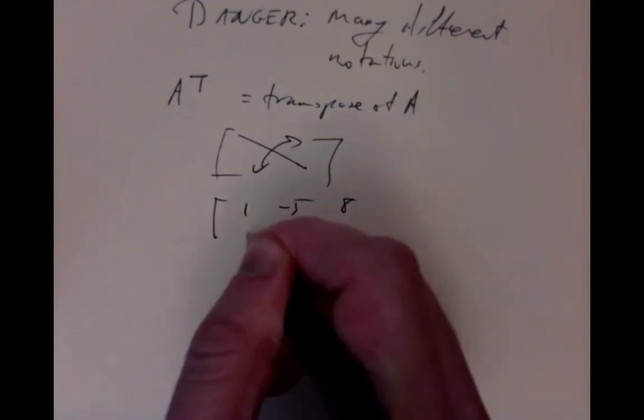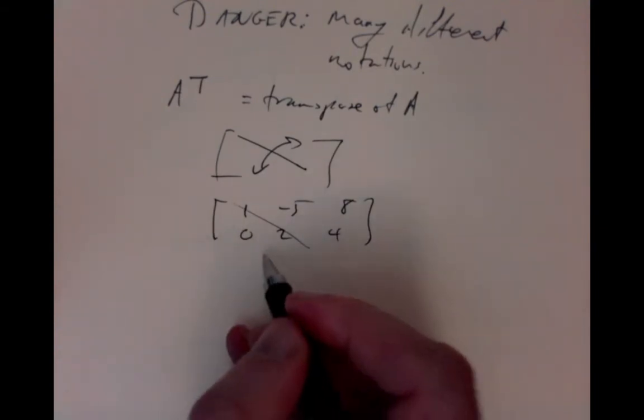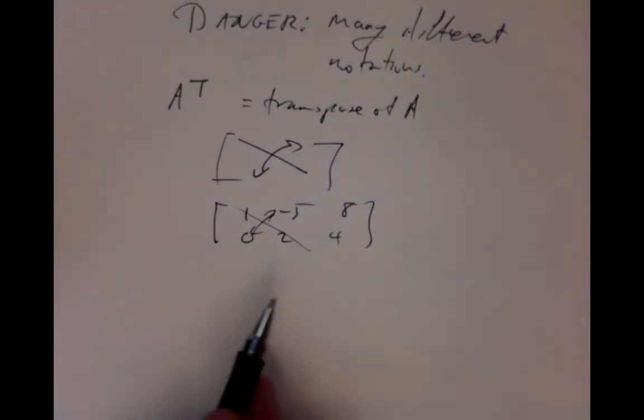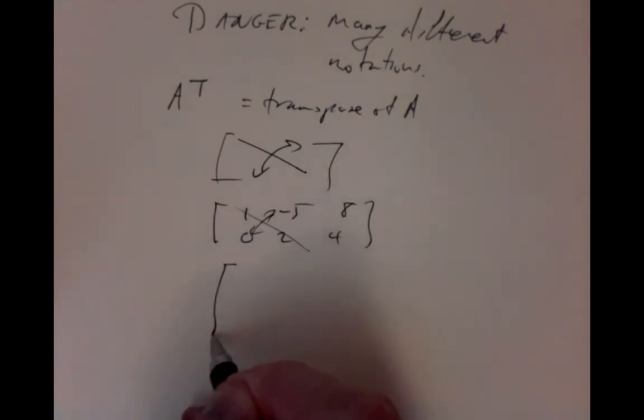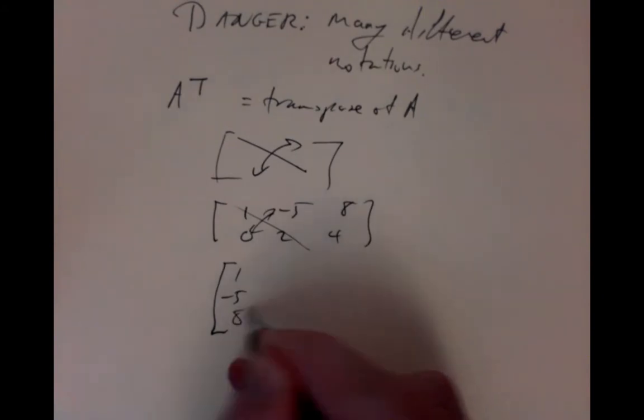And what is the transpose? It's a very simple thing to calculate. It just simply means we take the matrix and we swap which of the rows and which of the columns. So we flip it this way to flip the rows and the columns. For example, if I had [1, -5, 8; 0, 2, 4], I would take that and flip it. So the matrix entries go across this diagonal here. The first row becomes the first column: 1, -5, 8.